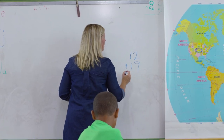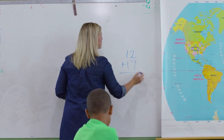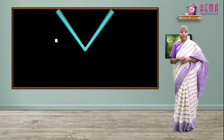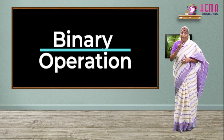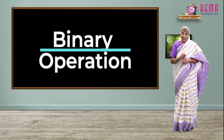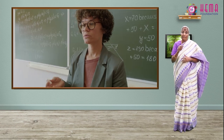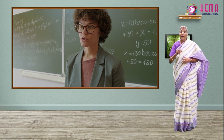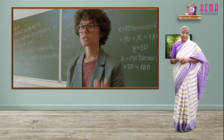The binary operations associate any two elements of a set, and the resultant of the two are in the same set. Binary operations on a set are calculations that combine two elements of the set, called operands, to produce another element of the same set.